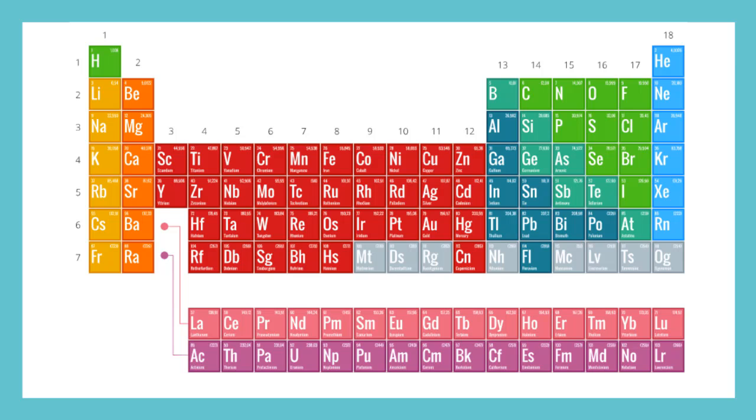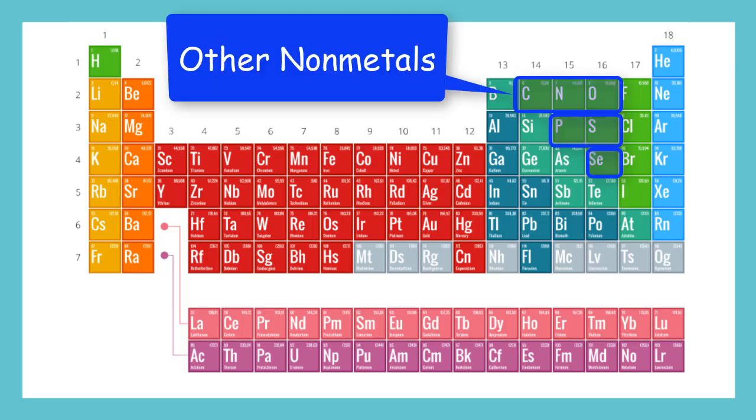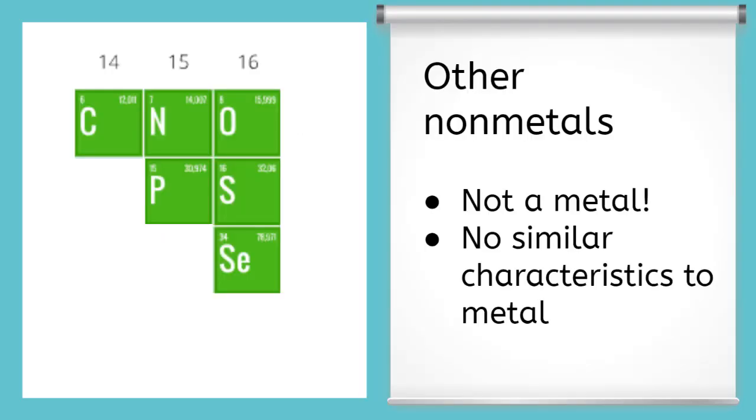We have another group that we refer to as other non-metals. Since the metalloids and the halogens are non-metals as well, but also have their own specific categories. The other non-metals are found in groups 14, 15, and 16. Other non-metals are, you guessed it, not metals. But unlike metalloids, the other non-metals do not have similar characteristics to metals. And they can exist in all 3 states of matter at room temperature.